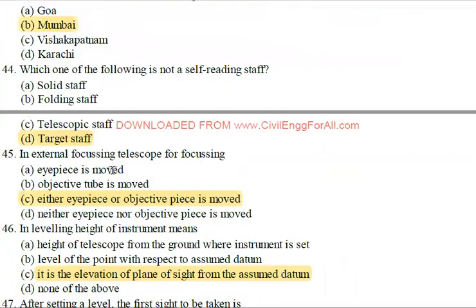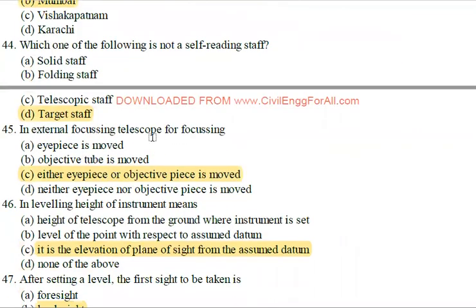Next: The external focusing telescope — for focusing, either the eyepiece or the object piece is moved. The external focusing telescope uses either the eyepiece or object piece.